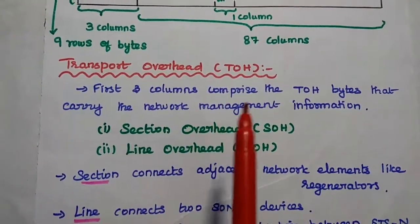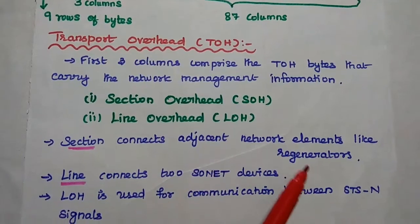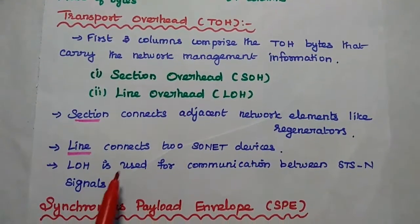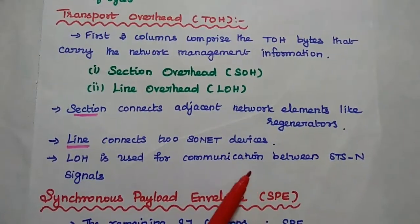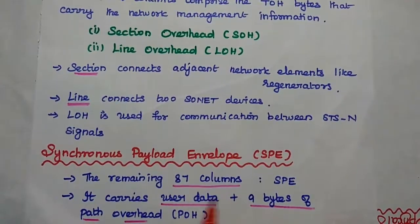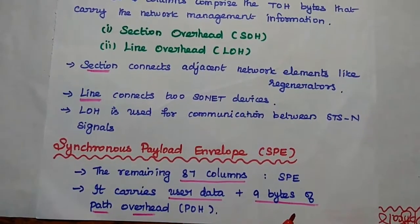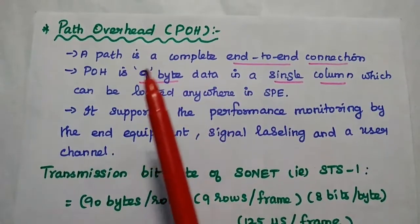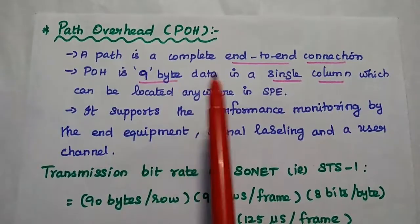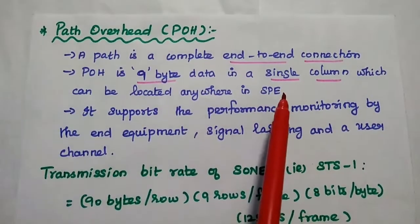Transport overhead: these three columns comprise section overhead and line overhead. Section connects adjacent network elements like regenerators; line connects two SONET devices. Line overhead (LOH) is mainly used for communication between STS signals. The SPE (Synchronous Payload Envelope) consists of the remaining 87 columns. It carries user data and path overhead. Path overhead is a 9-byte single-column field that can be located anywhere in the SPE within the SONET frame.